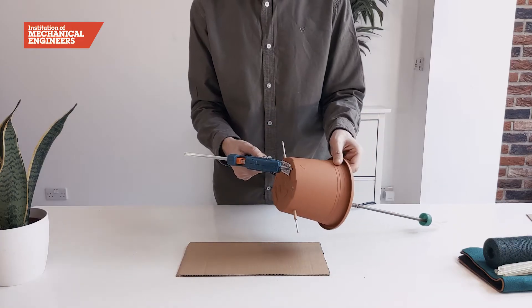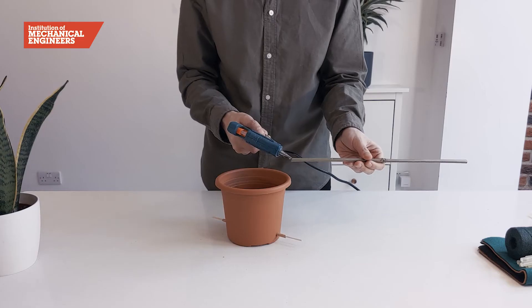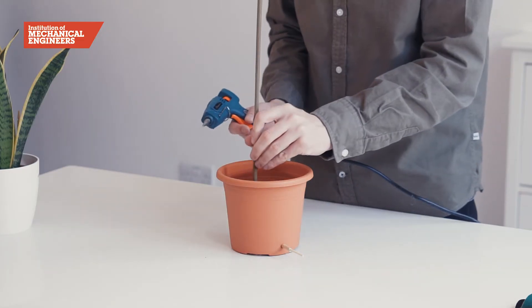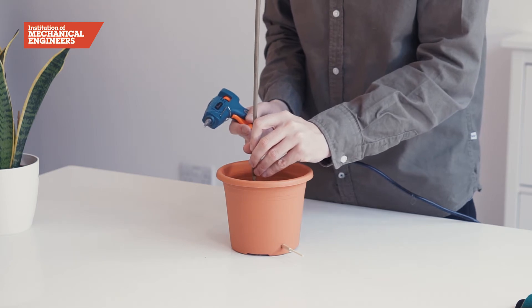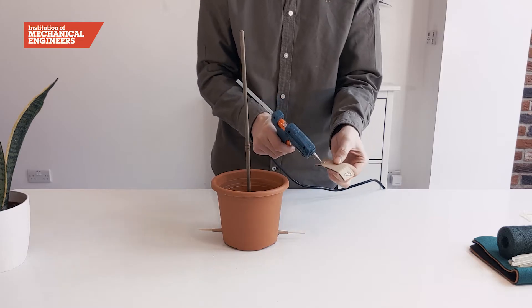Secure the base of the pot onto our cardboard base and then attach the stalk to the bottom of the plant pot. Adding some pieces of cardboard inside will help stabilize the stalk and keep it upright.